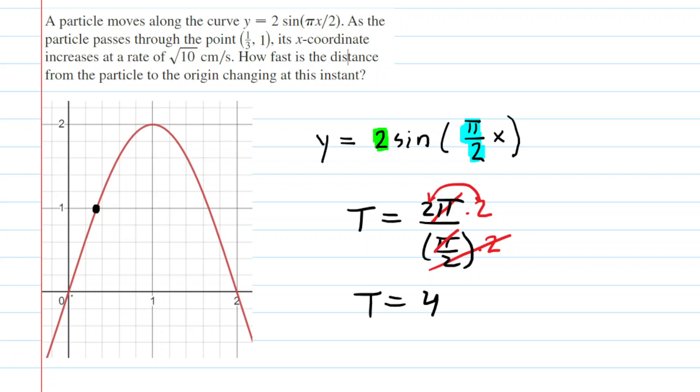But you'll notice we've only sketched half of the period. We started at the origin because it's a sine function, and we went to half of the period, which is positive 2. We just stopped because we really don't need more than that to understand this question.